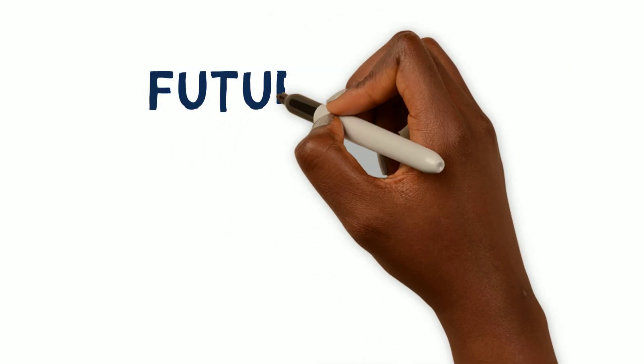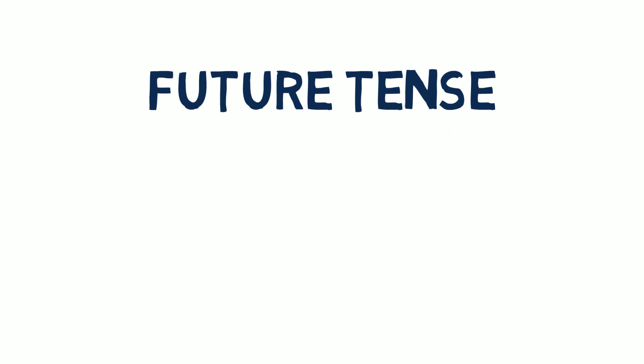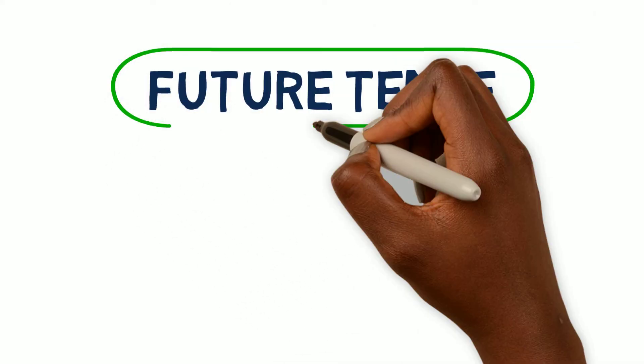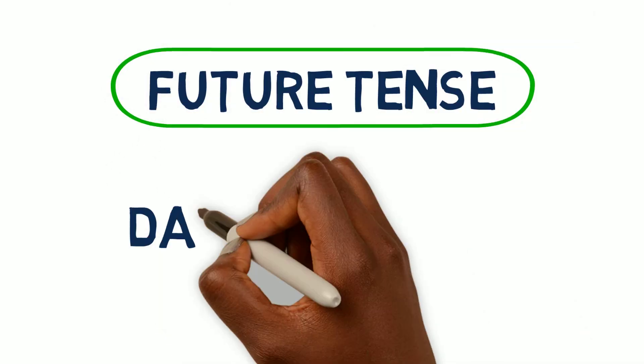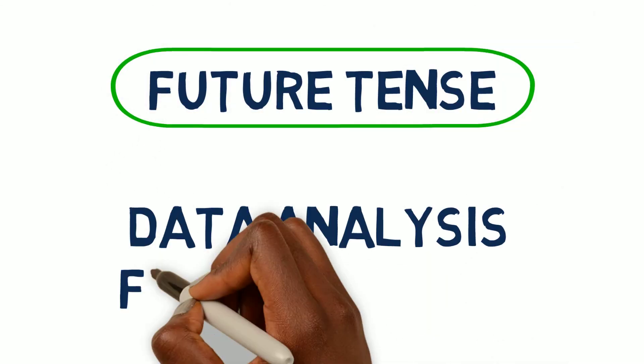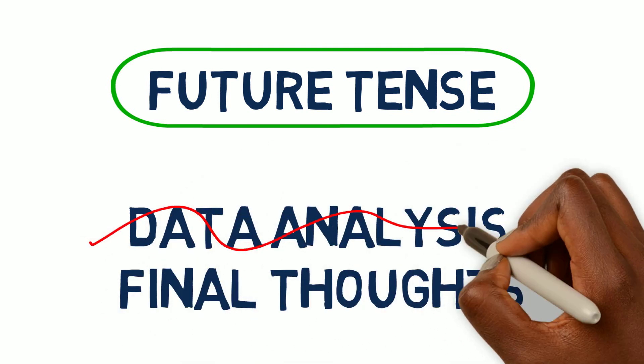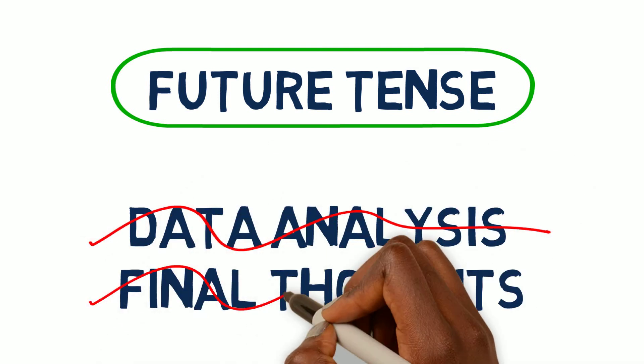Remember, your action research plan is a proposal for future research, so write it in the future tense. Don't include the data analysis and final thoughts, since you haven't yet conducted the actual study.